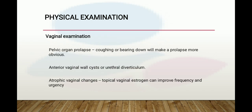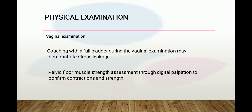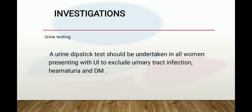On vaginal examination, coughing or bearing down makes prolapse more obvious. Anterior vaginal wall cysts or urethral diverticulum can be seen, as can atrophic vaginal changes. Topical estrogen can improve frequency and urgency. Coughing with a full bladder during vaginal examination may demonstrate stress leakage. Perineal muscle strength assessment through digital palpation is done to confirm contraction and strength.